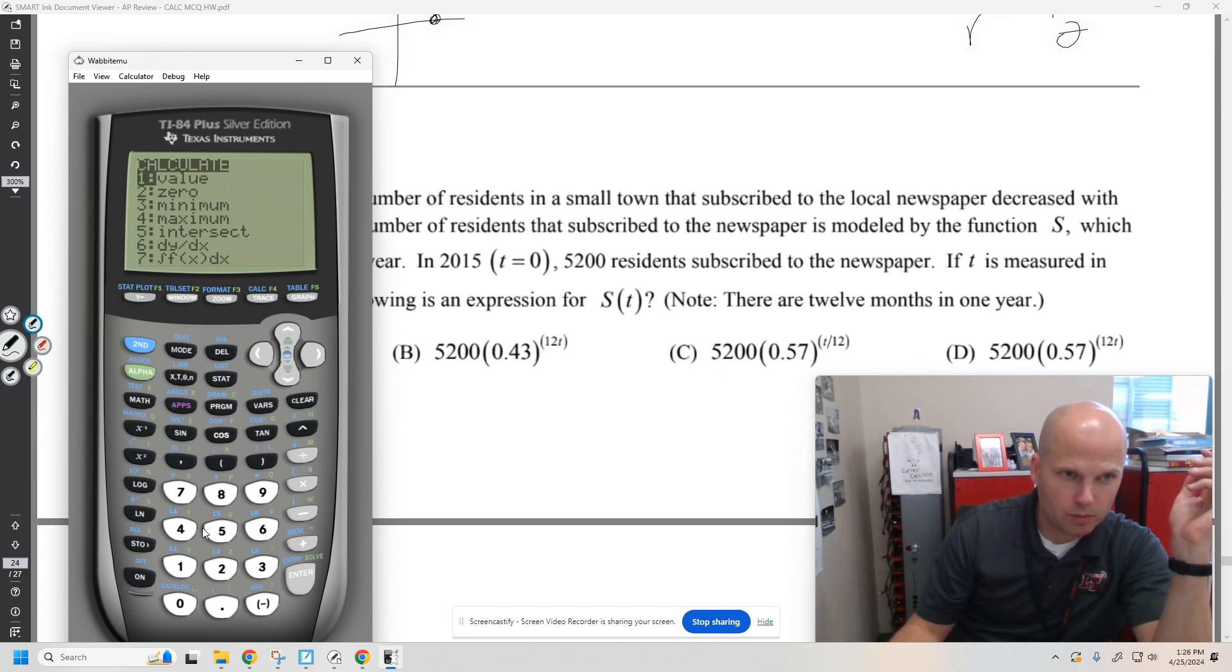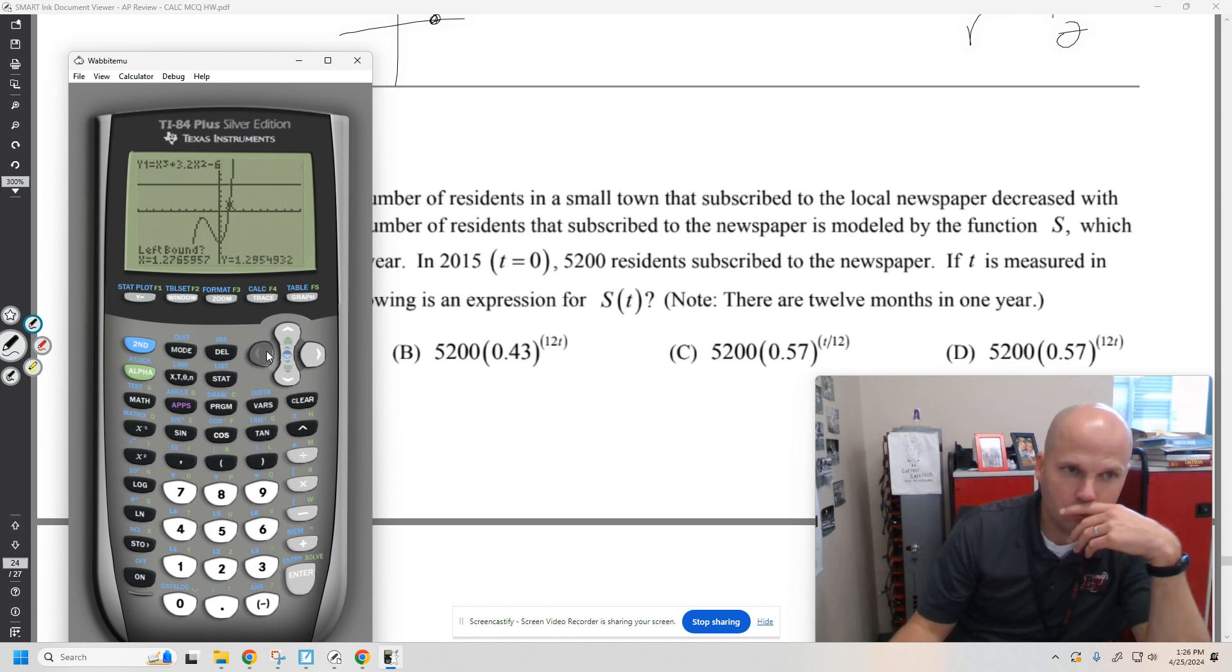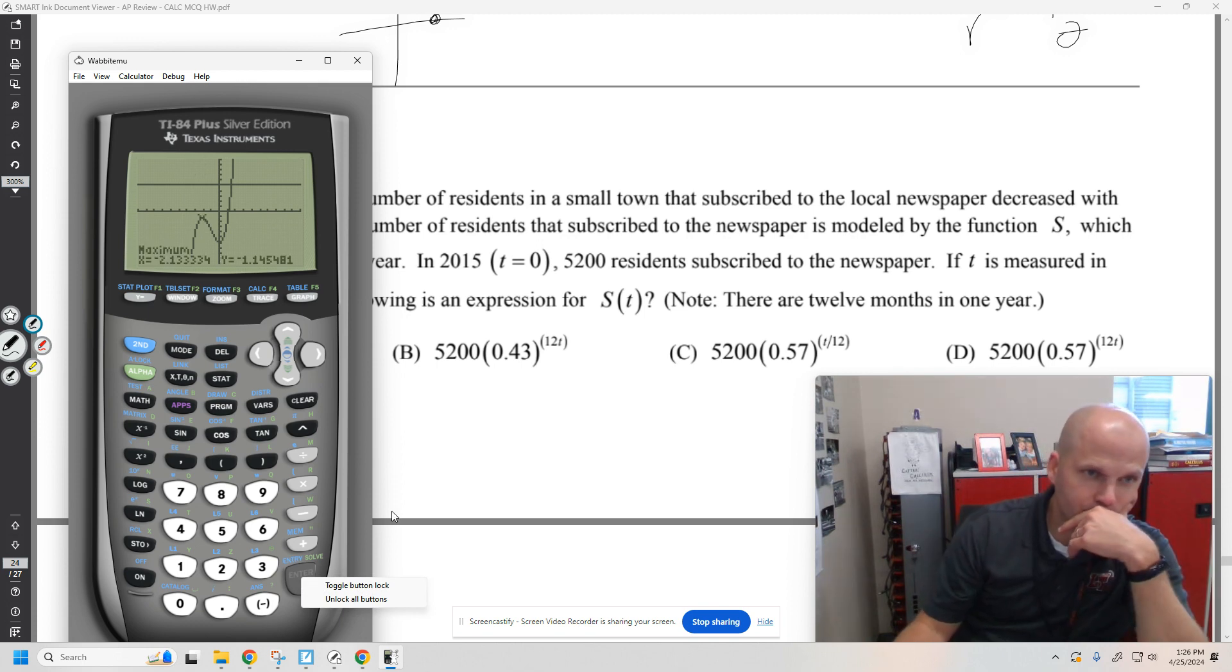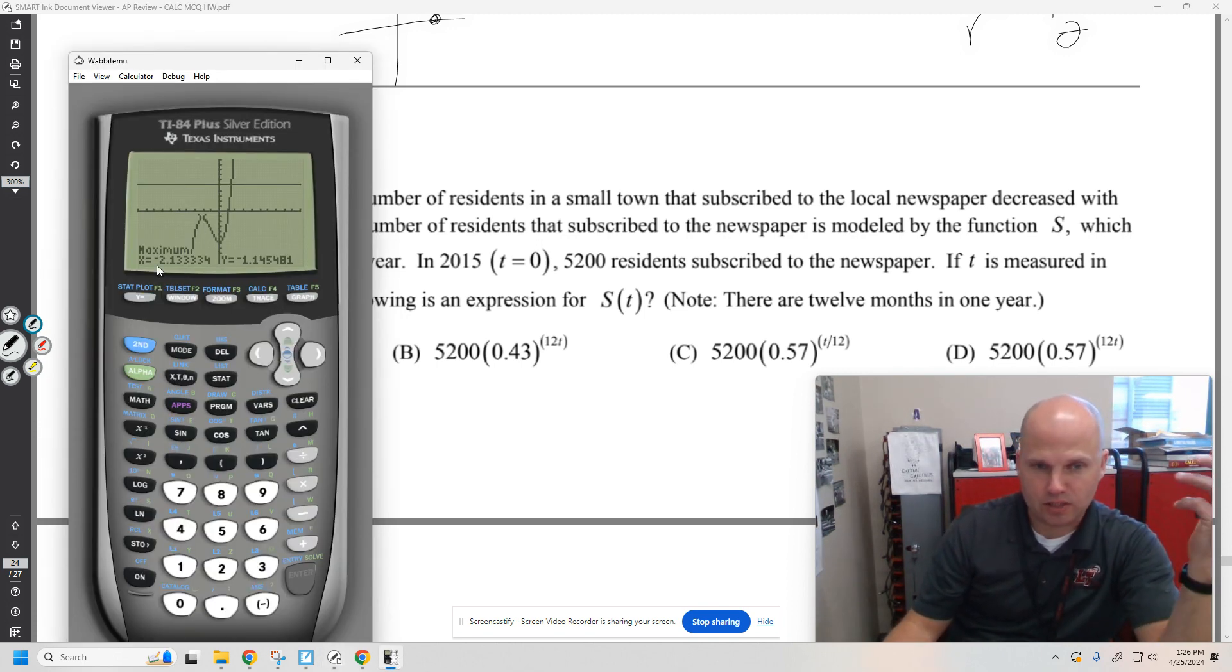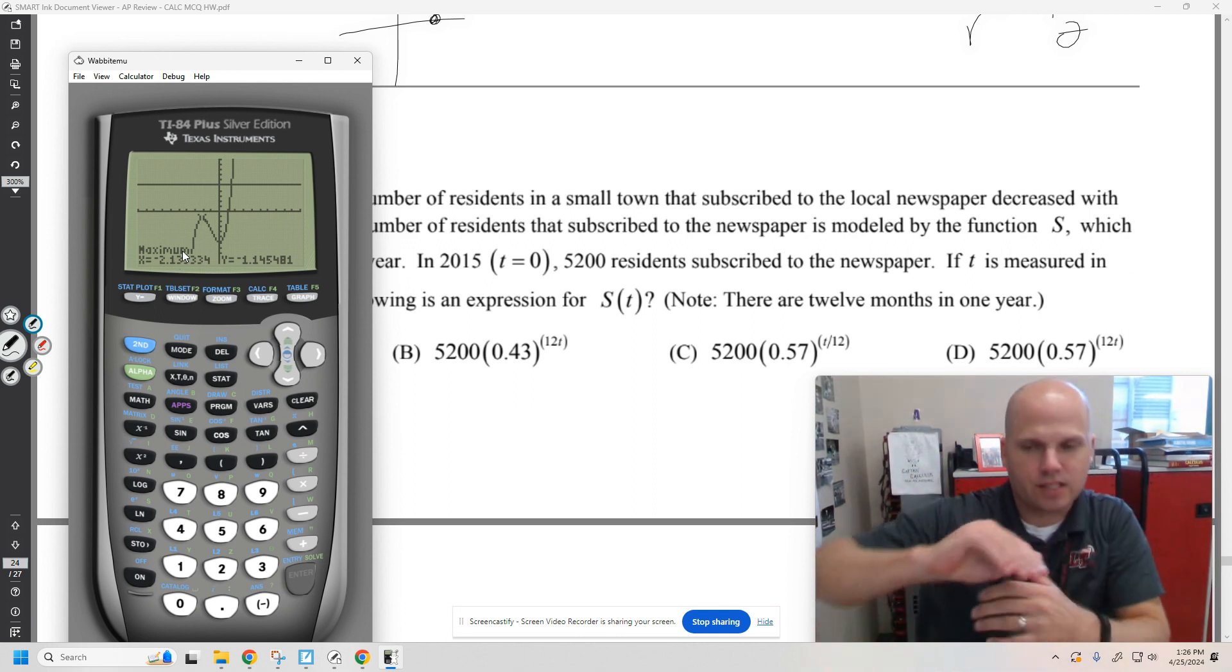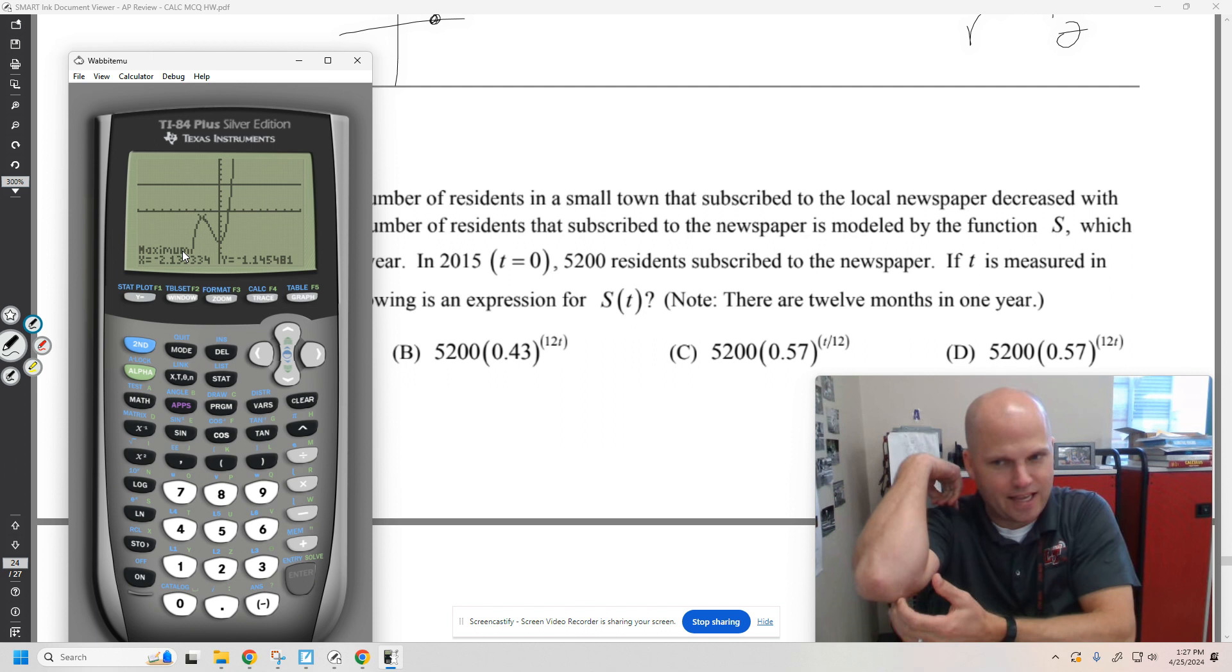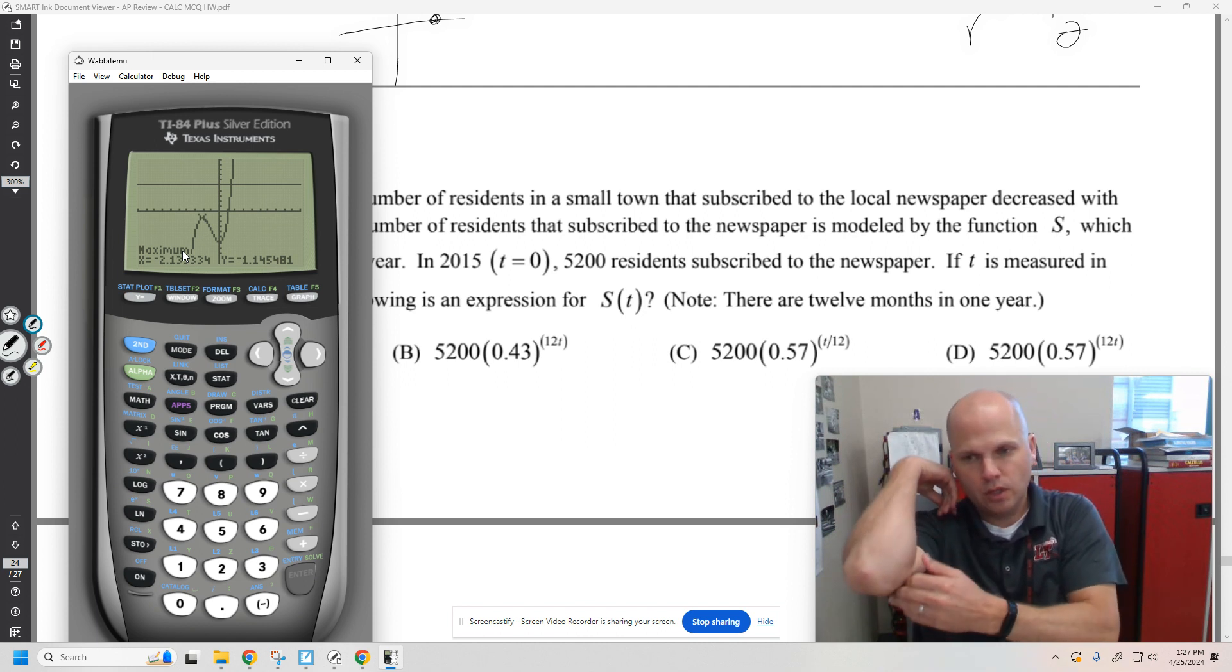Min, say we want to find the location of a max. Make sure you set a left bound, set a right bound, then have your calculator guess. Got greater guesses, it uses a numerical process to find the best guess as what the max is, but it does not algebraically solve it, so it might not get exact answers all the time.